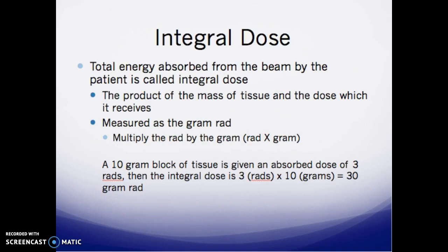Integral dose is the total energy absorbed from the beam by the patient. It is a product of the mass of tissue and the dose it receives, measured in gram-rads. For example: a 10-gram block of tissue given an absorbed dose of 3 rads yields an integral dose of 3 rads × 10 grams = 30 gram-rads. You multiply the mass of irradiated tissue by the dose in rads to get your gram-rad value.